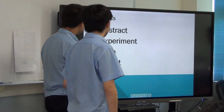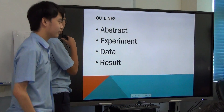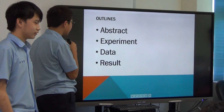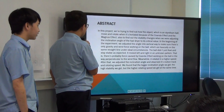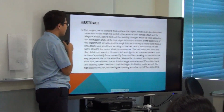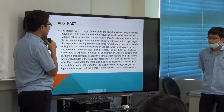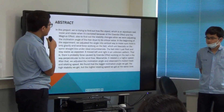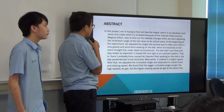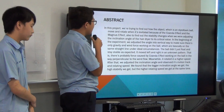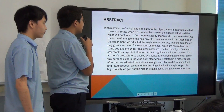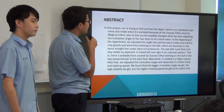Okay, I'll go back to abstract and experiment data and results. In this project, we're trying to find out how an object is formed, moved, and rotated when it's influenced by the Coanda effect, drag, and magnetism — and also to find out the stable change when it works.